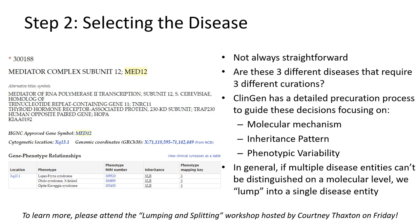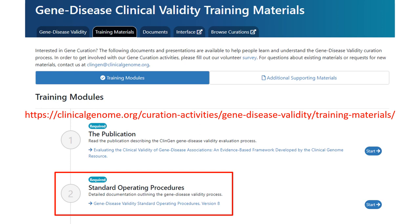Once the genes are selected, the GCEP must carefully determine which disease they will be evaluating. This process is not always straightforward, as many genes have been associated with multiple conditions. ClinGen has a pre-curation process in place to help GCEPs walk through these decisions. For each gene disease pair, we evaluate the molecular mechanism, the inheritance pattern, and the phenotypic variability. In general, if the disease entities are not distinguishable on a molecular level — for example, loss of function variants cause one disease and gain of function variants cause a completely different disease — then the disease entities will be lumped into a single overarching disease entity for curation purposes.